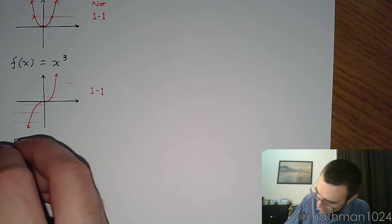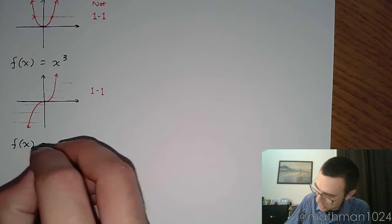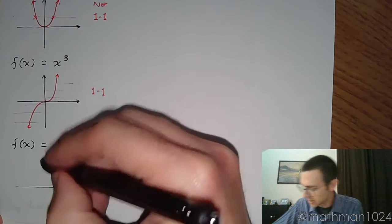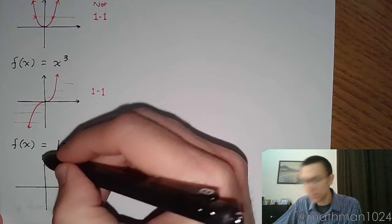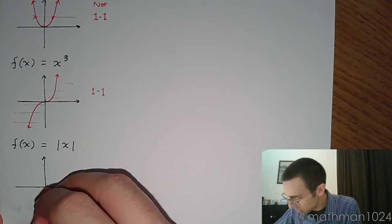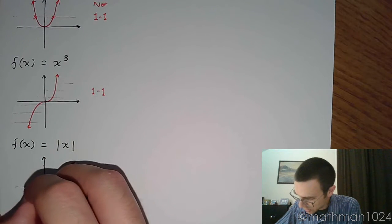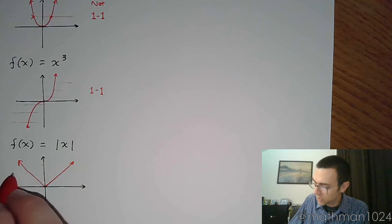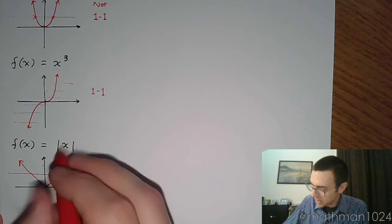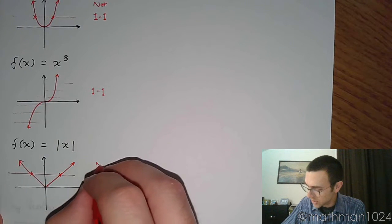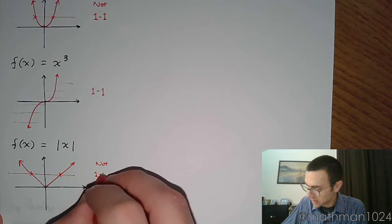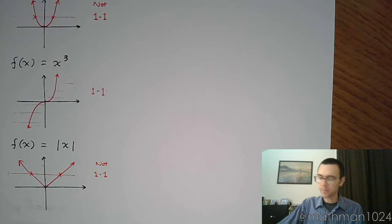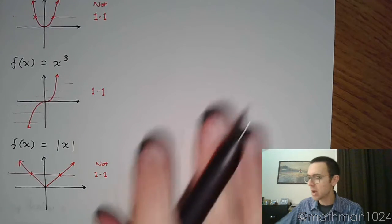One of my favorite guys is the absolute value function, f(x) equals the absolute value of x. I hope that you remember the shape - it's just a V-shape like that. You can see that if you do a horizontal line test, this fails, so this is not one-to-one. Since it's not one-to-one, it doesn't have an inverse.